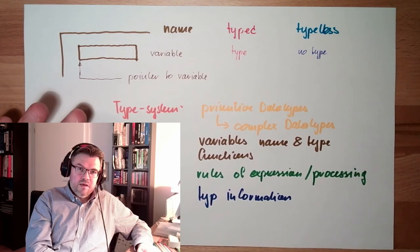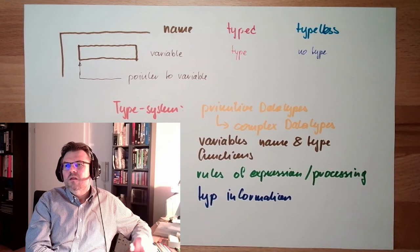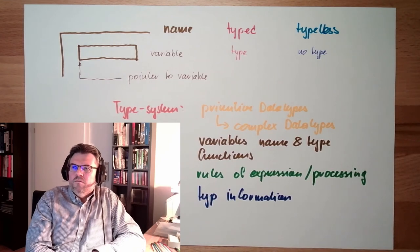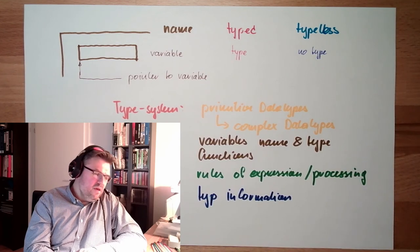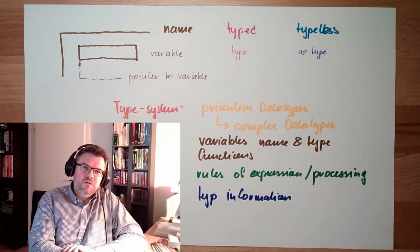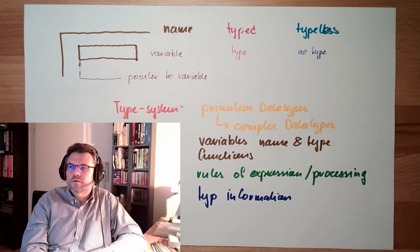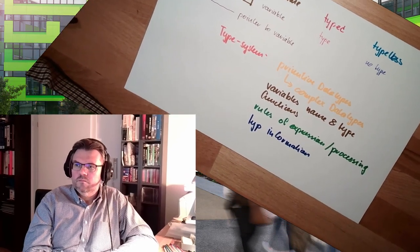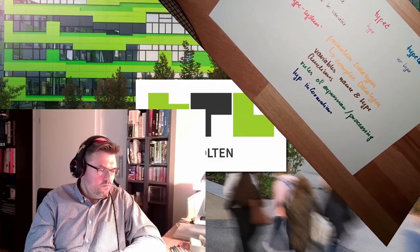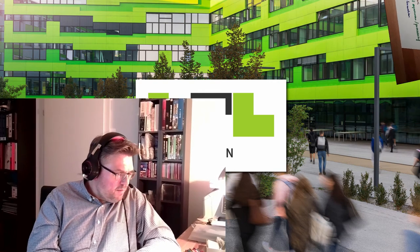If the type system can be checked during compile time, this is static typing. If the types are only checked during runtime, it's dynamic typing. That's it, that's the type system.